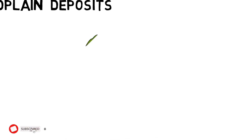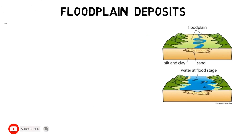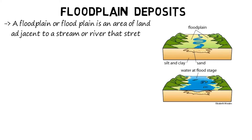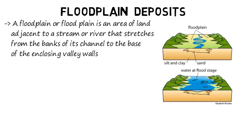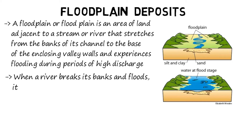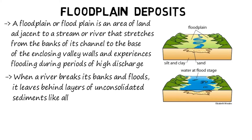Let's start with floodplain deposits. First of all, what is a floodplain? A floodplain is an area of land adjacent to a stream or river that stretches from the banks of its channel to the base of the enclosing valley walls and experiences flooding during periods of high discharge. When a river breaks its banks and floods, it leaves behind layers of unconsolidated sediments like alluvium, silt, sand, clay and some amount of gravels.